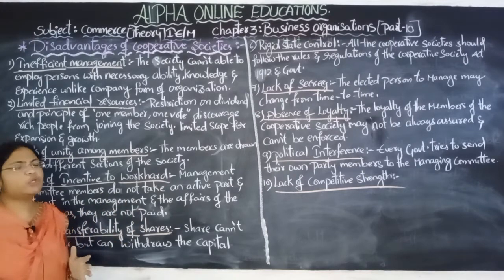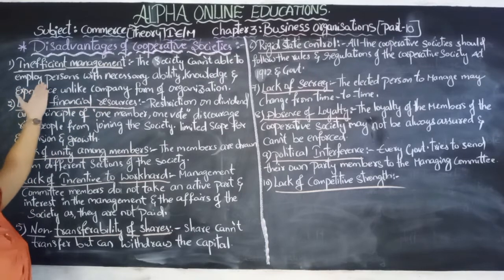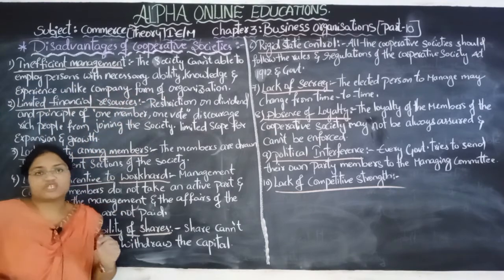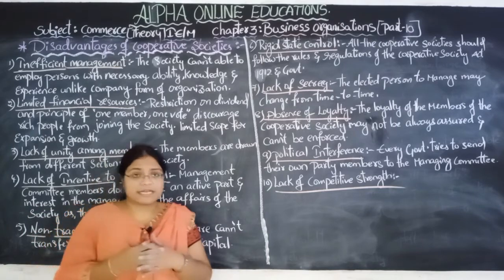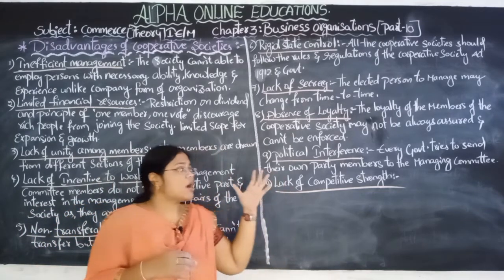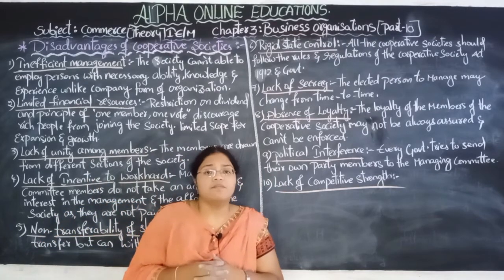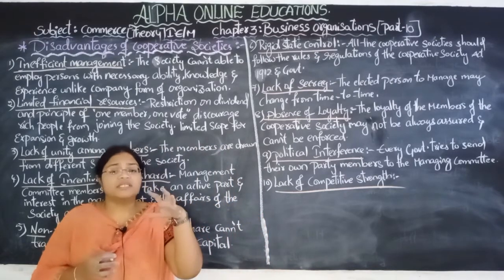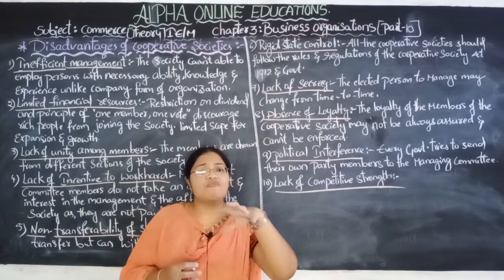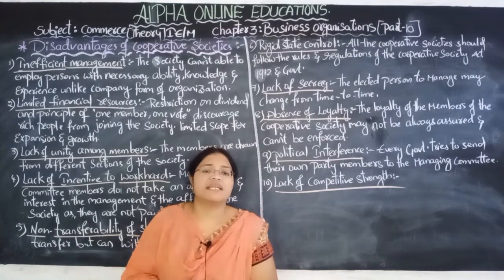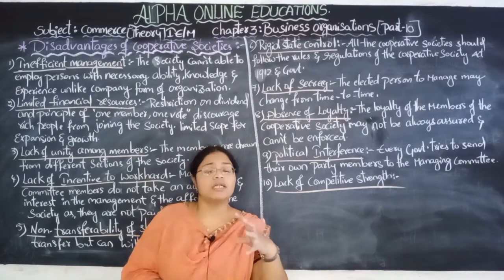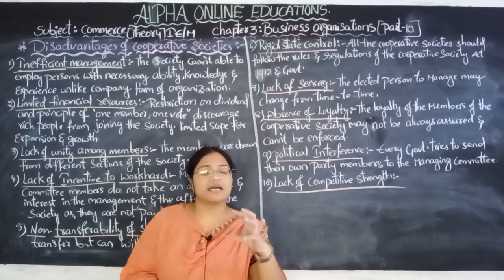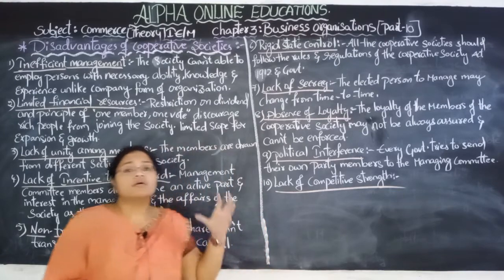There is less management support because the cooperative society cannot afford persons with the necessary abilities, knowledge, and experience, unlike the company form of organizations, which employ expert persons. These cooperative societies cannot afford employees with specific skills, knowledge, and talent because they have very limited resources. Due to these very limited resources, they cannot afford management with the correct knowledge about running cooperative societies.